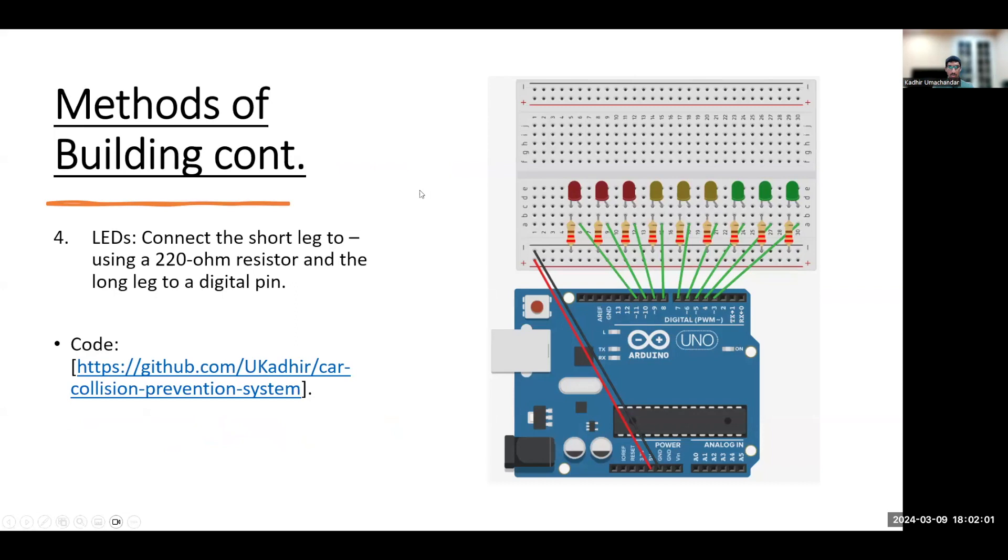Then for the LEDs you need to connect the short leg to minus using a 220 ohm resistor and the long leg to a digital pin. I decided to use an array of 9 LEDs, 3 red, 3 yellow and 3 green that will act as a digital display of the distance you are from the vehicle in front of you.